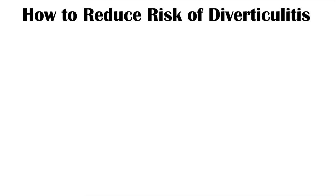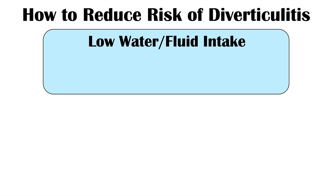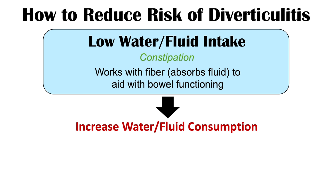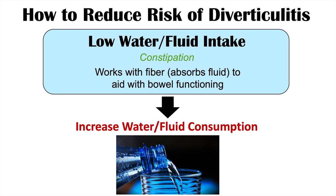Another risk factor is low water or fluid intake. This can lead to constipation through a very similar mechanism. Water and fluid intake works with fiber — fiber can absorb fluid to aid with bowel functioning. So increasing your water and fluid consumption can help reduce the risk of having diverticulitis in the future.